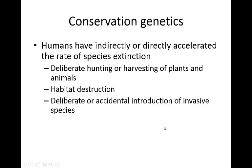Humans have indirectly or directly accelerated the rate of species extinction, and we've done this through several different ways. First, directly through hunting or harvesting of plants and animals — literally hunting them to extinction. The passenger pigeon is a pretty recent example of this. Passenger pigeons used to be in thousands in the sky, and now they have gone extinct. There are just a few samples left, and scientists are actually trying to use this to try to regrow the passenger pigeon.